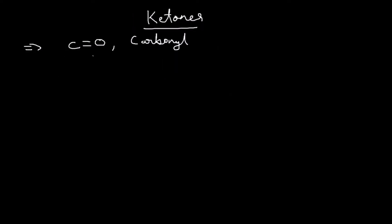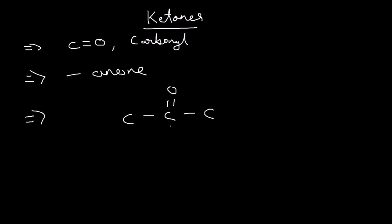With ketones, the C double bond O is going to be in the middle of the chain. They always end in '-anone' (A-N-O-N-E). I'm going to draw propanone, which is the first member of the series, because the C double bond O can't be at the edge of the chain — it has to be in the middle.